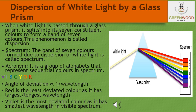Moving on, let us discuss the dispersion of white light by the glass prism. To understand this, let us perform one activity. Just take a thick sheet of cardboard and make a small hole or narrow slit in its middle. Now allow the sunlight to fall on the narrow slit so that it gives a narrow beam of white light. Now take a glass prism and allow that light from the slit to fall on one of its faces.